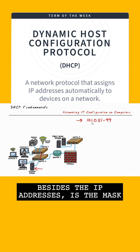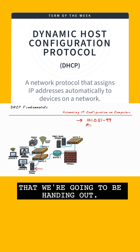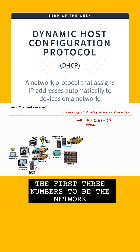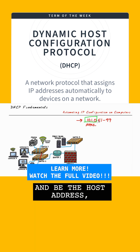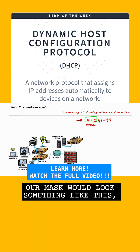Another thing we'd want to plan for, besides the IP addresses, is the mask that we're going to be handing out. With the first three numbers being the network and the last number being the host address, our mask would look something like this.